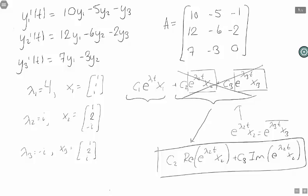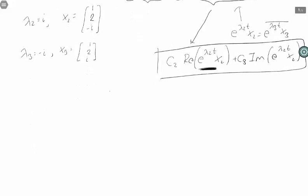So I need to figure out what does this look like, what's its real bit, and what's its imaginary bit. So let's start by just writing it out. I have e to the lambda 2, which is i, times t, times x2, which is [1, 2, -i].